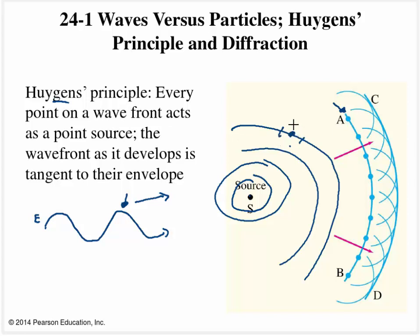That individual source is going to be sending out secondary wavelets. So as we slice and dice our wave up into individual pieces, this piece acts like a source, this piece acts like a source, this piece acts like a source — each sending out little circles of their own. These are all going to add together pretty much where the next crest is going to be.